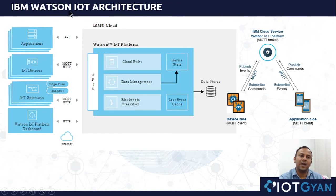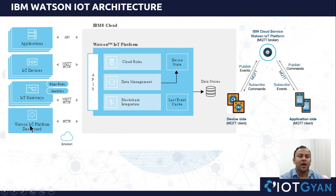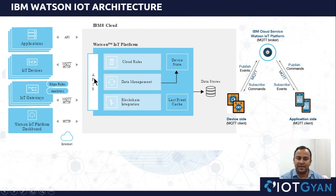Let's take a look at the IBM Watson IoT architecture. Here you can see the IBM Watson IoT platform which is connected to the applications, IoT devices, or the Watson IoT platform dashboard. There is a need for an interface layer which can easily understand everything sent by either an application or a device. Some conversion facility should be there which must be platform independent, so whenever data is sent by IoT devices using MQTT or HTTP it should have access to the cloud platform.